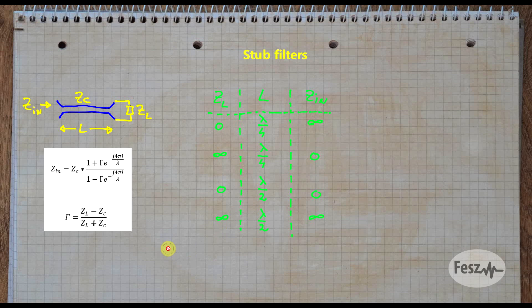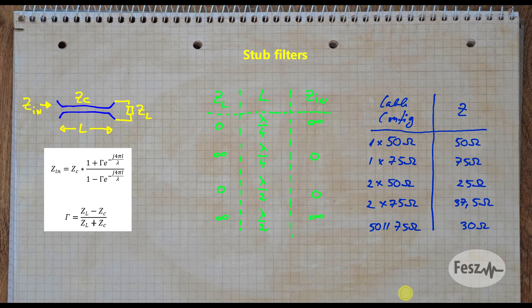Now if you have access to any transmission line impedance, you can create a lot of complex filters and responses. But the big limitation using coax cable is that you only have a few impedances to work with. Commonly available are 50 and 75 ohm impedance cables.